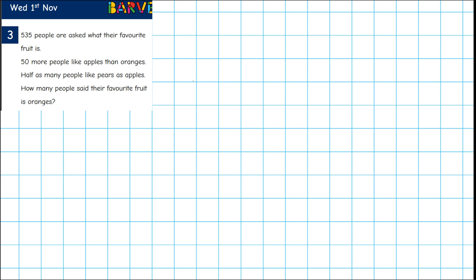Okay, so to the question. 535 people are asked what their favourite fruit is. 50 more people like apples than oranges. Half as many people like pears as apples. And we're asked how many people said their favourite fruit is oranges.